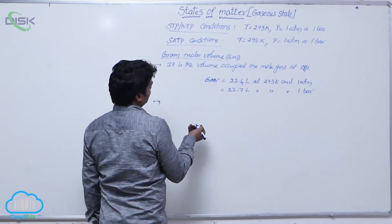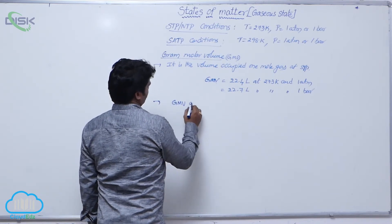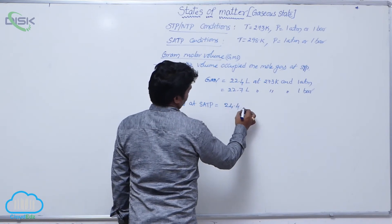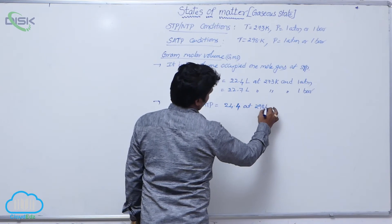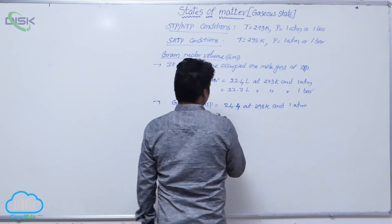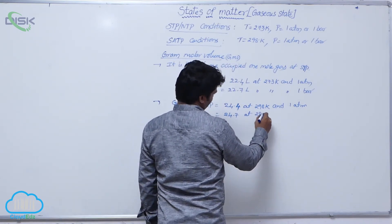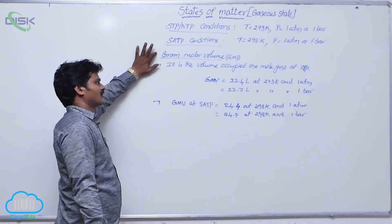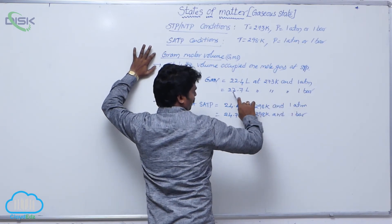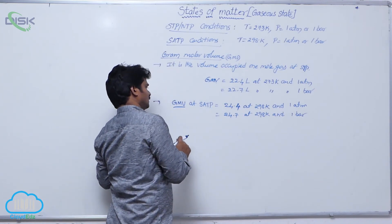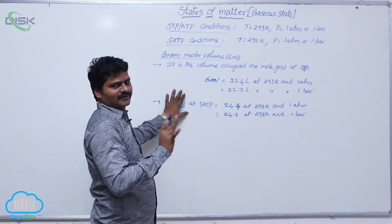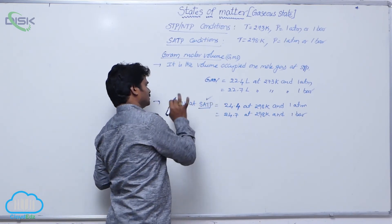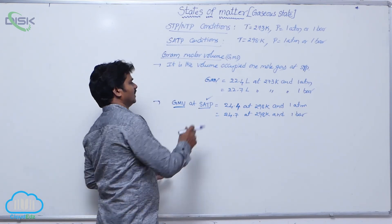Gram molar volume at SATP conditions: the GMV value at standard ambient temperature and pressure is 24.4 L at 298 K and 1 atm, or 24.7 L at 298 K and 1 bar pressure. So we have STP and SATP gram molar volumes. Note that at SATP it is the volume of 1 mole of gas, which is why the term GMV is used.